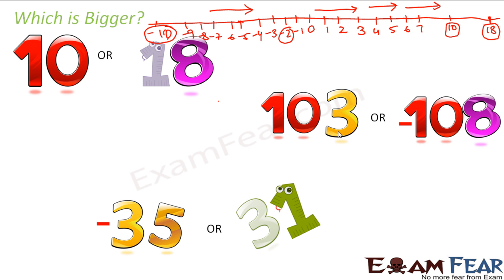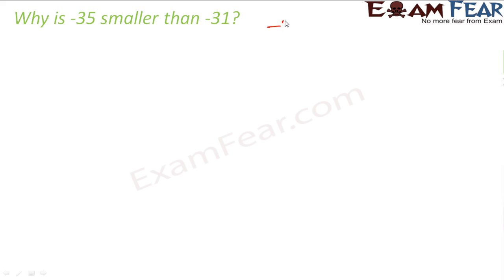Let's look at this example: you have 103 or minus 108. Again, in this case the positive number would be greater than the negative number. Now let us understand the comparison between two negative numbers — minus 35 and minus 31. Which one is greater? If you forget about the negative sign, 35 is greater than 31. But the moment we put a negative sign on both numbers, the relationship becomes opposite. So minus 35 is smaller than minus 31, because minus 31 is on the right of minus 35 on the number line, and anything on the right is greater.